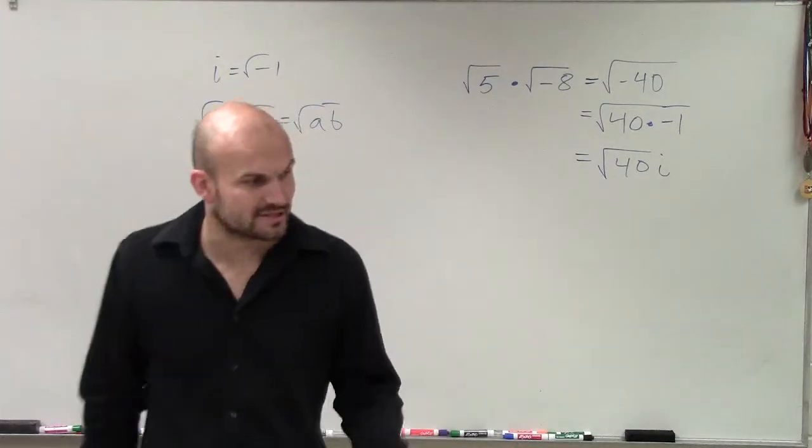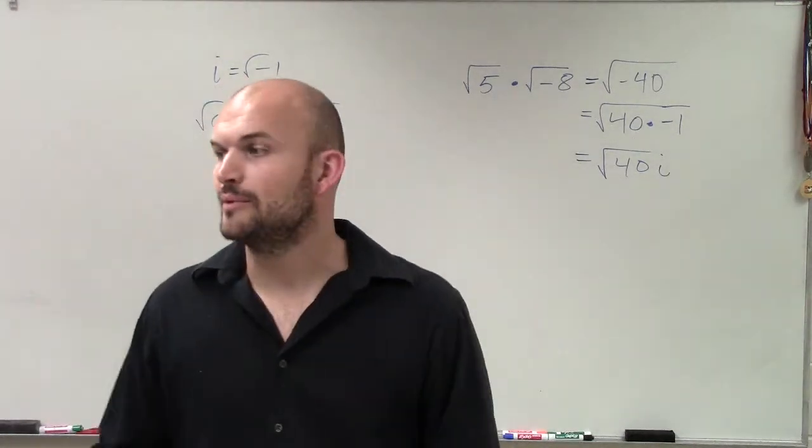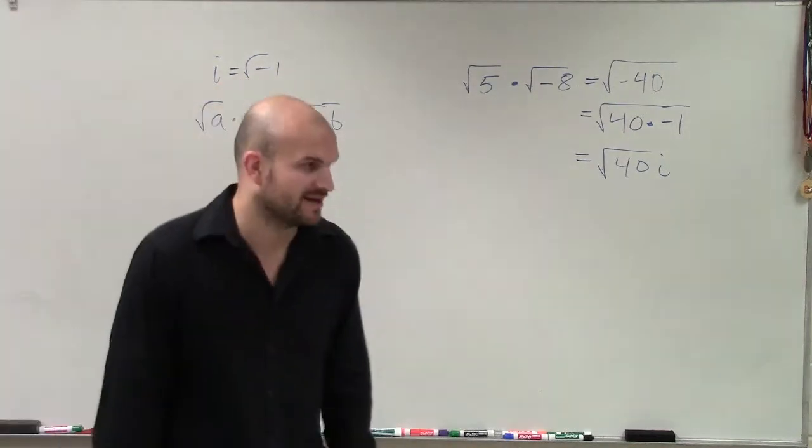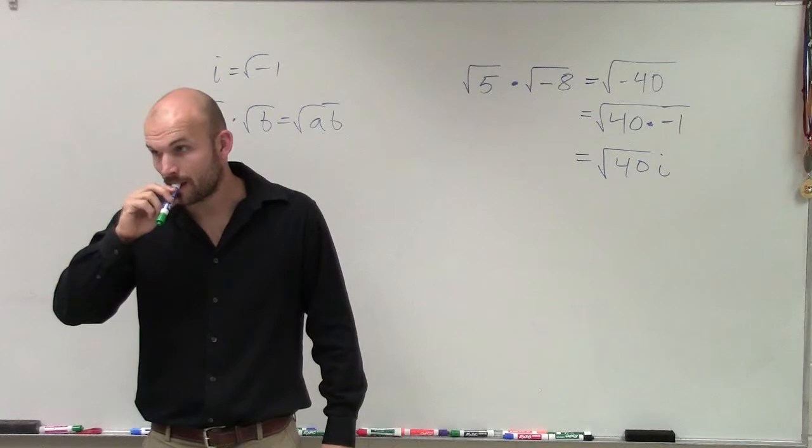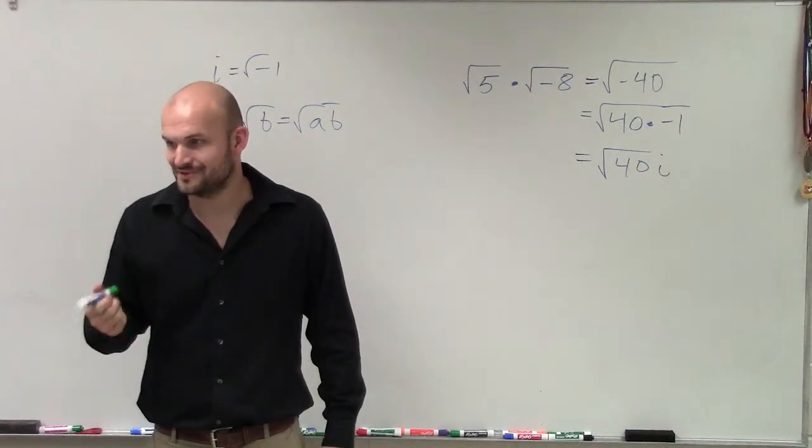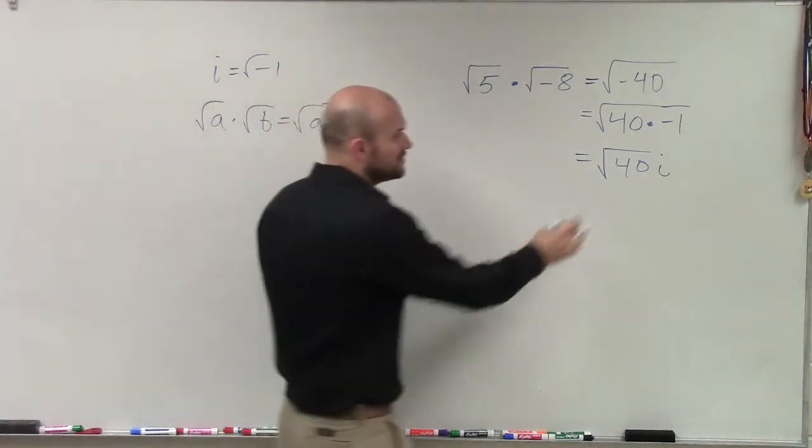We want to be able to see, can I simplify this? So does anybody remember how to simplify square roots? You've got to find the perfect square that goes into it, which is 4. Yes. So you can do this even further.